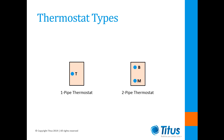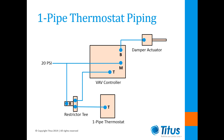Let's start with the one-pipe thermostat. As you might guess, a one-pipe thermostat only has a single air connection, while a two-pipe thermostat has two connections. Looking at this piping diagram, you'll see that the 20 psi main air is going to two different places: one line goes to the main air port of the VAV controller, and the other goes to a restrictor tee.